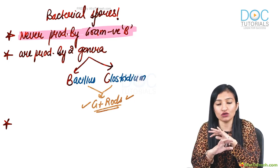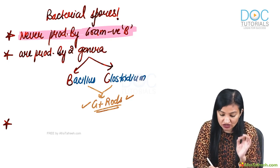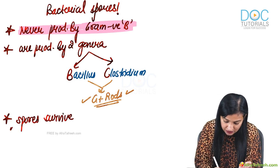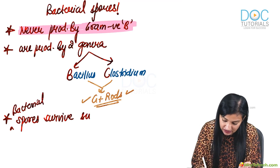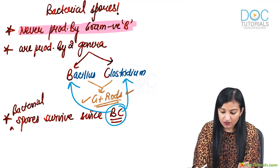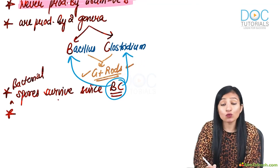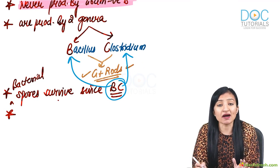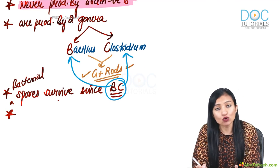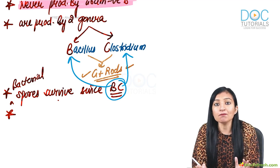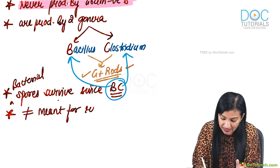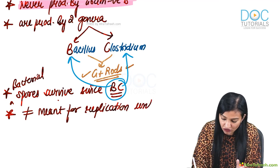Spores can survive for years and years altogether. A memorizing tip: bacterial spores survive since BC — before Christ — so remember B for Bacillus, C for Clostridium. Spores are also encountered in fungi where they participate in fungal reproduction, whereas that is not the case with bacteria. Bacteria replicate by binary fission, so bacterial spores are not meant for replication unlike fungal spores.